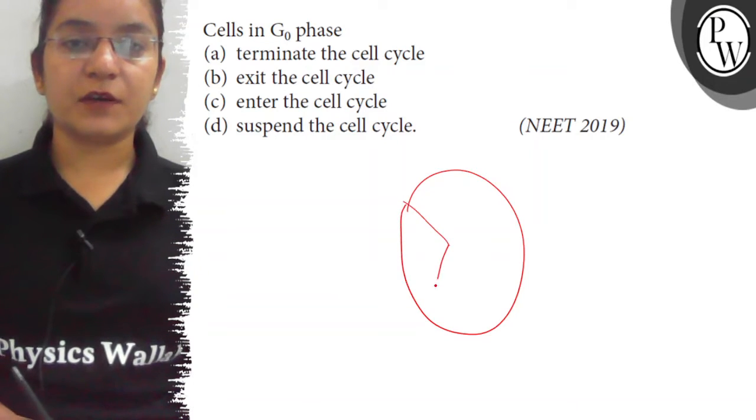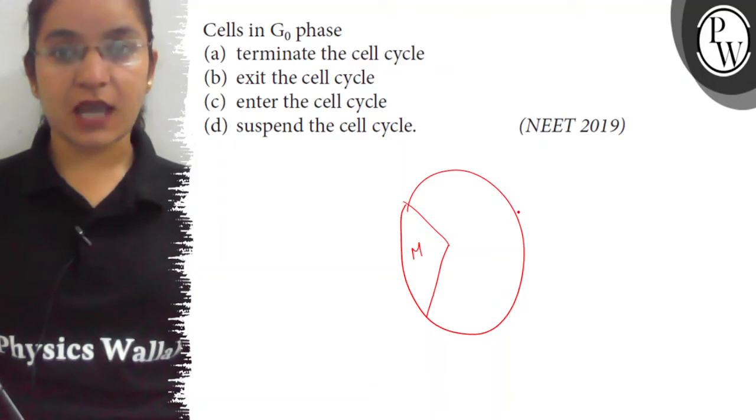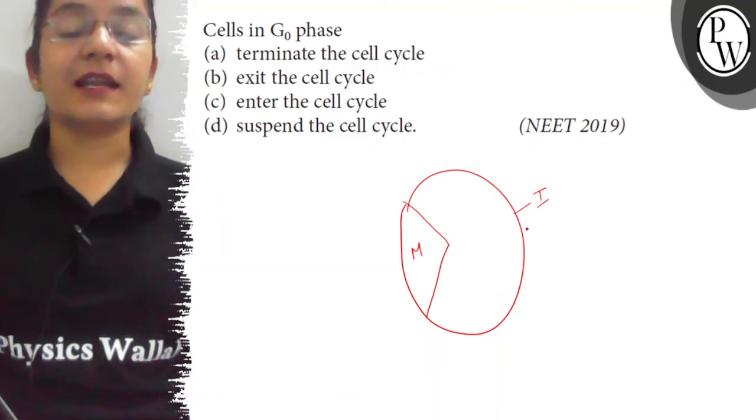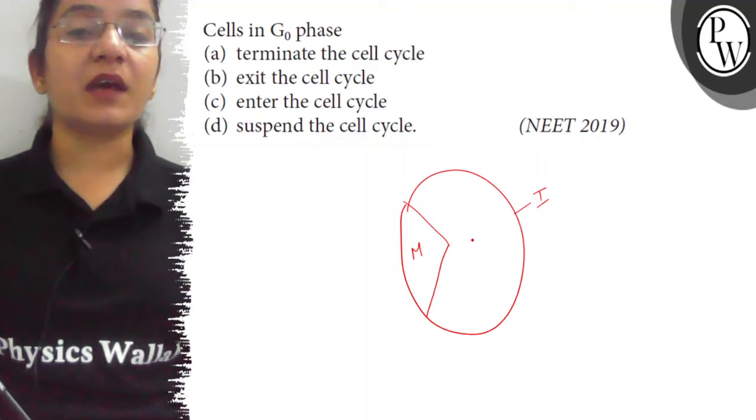of a cell cycle are first is M phase, the division phase when the cell divides, and this is interphase, that's the resting phase when the cell is preparing itself for the various other events or for the next division.